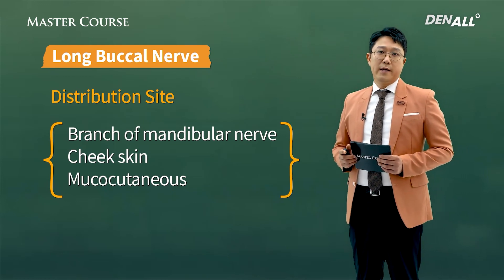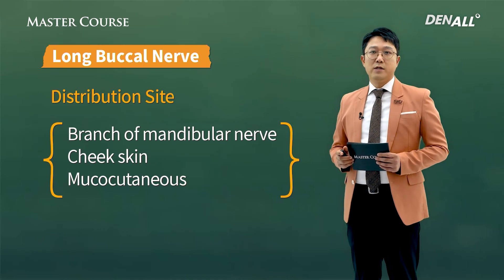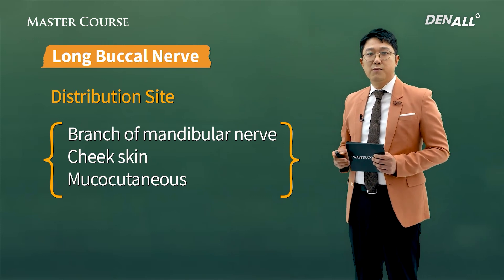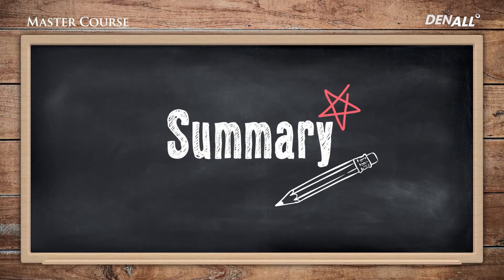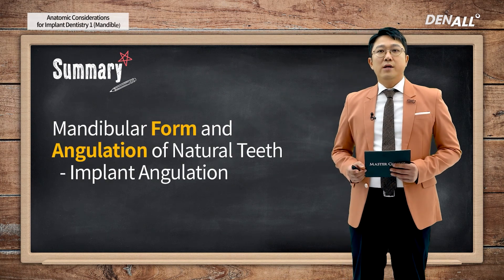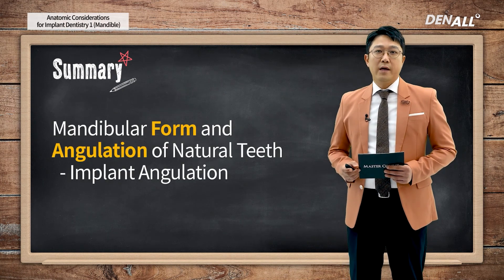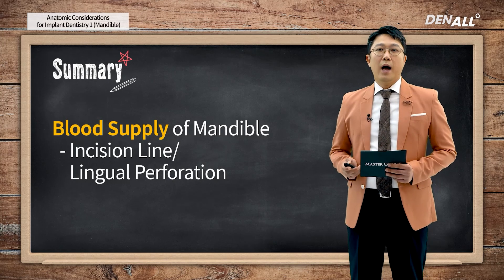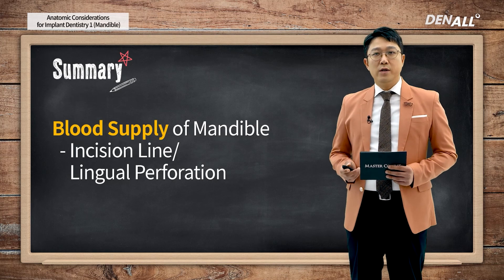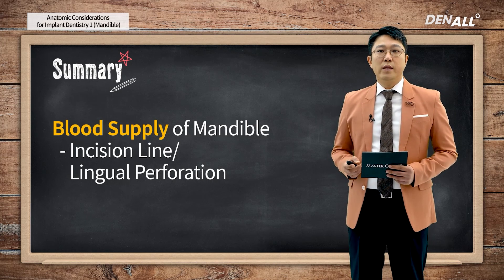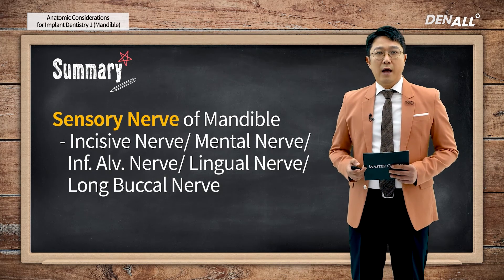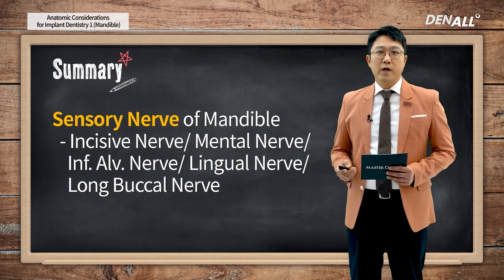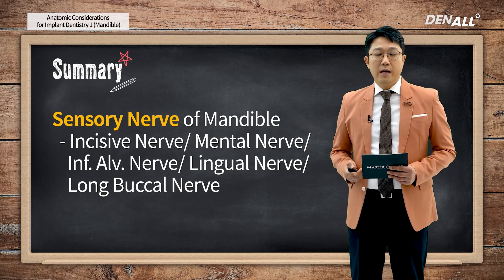Up to now, we have talked about the anatomy of the mandible in relation to implant placement. To briefly summarize the three main things: First, mandibular implants should be placed at an angulation similar to natural tooth angulation. Second, regarding the blood supply of the mandible, due to the lingual form of the mandible a perforation can occur, so we need to be careful not to make lingual perforation. Third, regarding the sensory nerves of the mandible - incisive nerve, mental nerve, inferior alveolar nerve, and long buccal nerve - we need to be careful about these nerves when placing implants.